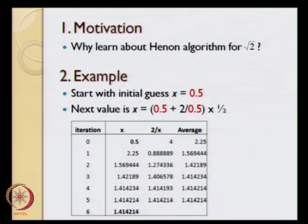Then we took that example, we started with the initial guess of 0.5 and again we calculated the next value x equal to 0.5 plus 2 divided by 0.5, the average of that multiplied by half and the next value.